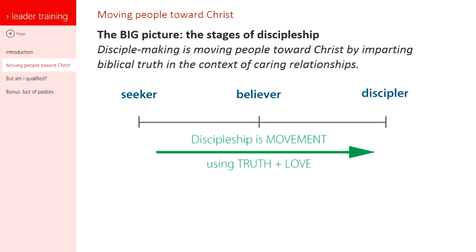There are two types of seekers that I want us to be aware of. First, there's the distant seeker — someone who might not even be very interested in God. And then there's the close seeker — the one who is maybe coming to church or is definitely interested in talking about spiritual things.